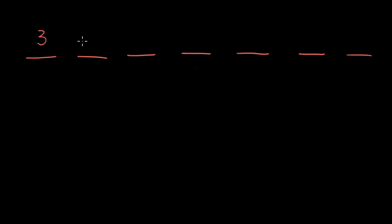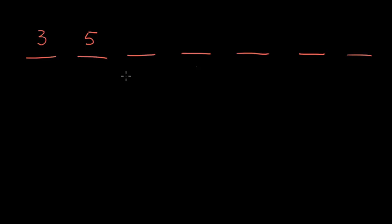We're given the first two terms directly. The first term is 3, the second term is 5. And then after this, we're told that every term in the sequence after a2 — after the second term — is the product of all the preceding terms.